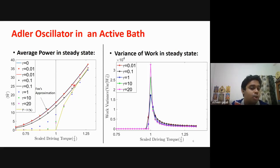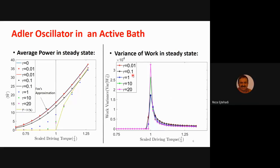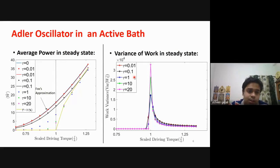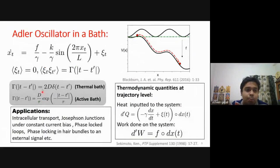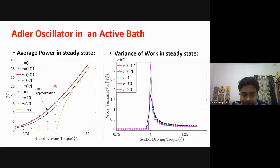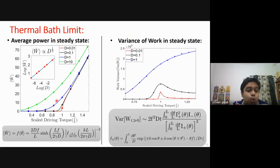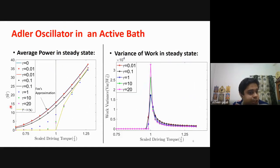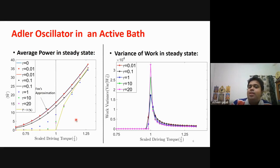[Question] What is the D parameter here? D is the diffusion coefficient — the strength of the noise, or the diffusion coefficient of the colloidal particle in the bath. In the figure shown, we fix D constant in the active bath and vary only the correlation time tau, corresponding to the blue curve in the thermal bath limit. So as expected, average power decreases toward the deterministic limit as tau increases.